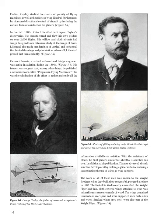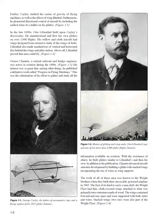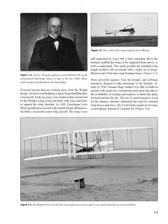The first of its kind to carry a man aloft, the Wright Flyer had thin, cloth-covered wings attached to what was primarily truss structures made of wood. The wings contained forward and rear spars and were supported with both struts and wires. Stacked wings — two sets — were also part of the Wright Flyer. Powered heavier-than-air aviation grew from the Wright design, and inventors and fledgling aviators began building their own aircraft. Early on, many were similar to that constructed by the Wrights, using wood and fabric with wires and struts to support the wing structure.